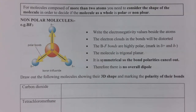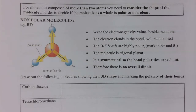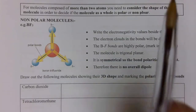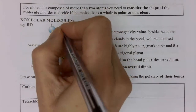If you consider the molecule BF3, this is a trigonal planar molecule and that shape is important. You've got different atoms with different electronegativities so the bonds will be polar. Fluorine, as the most electronegative, is always going to be delta negative and the boron in this case is going to be delta positive. So these bonds are highly polar.